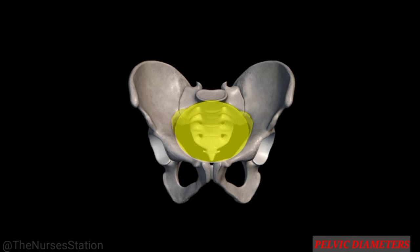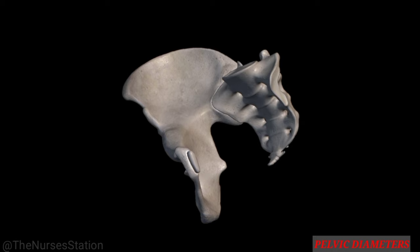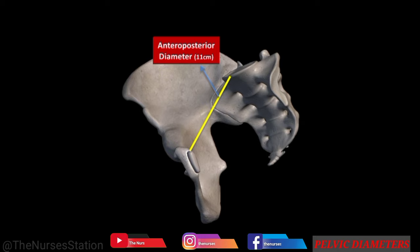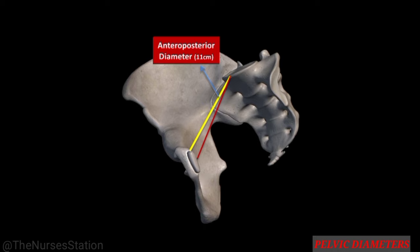The true pelvis is the pelvis below the pelvic brim, divided into the inlet, cavity, and outlet. The inlet is the brim of the pelvis; the cavity is bounded above by the inlet and below by the outlet. The inlet is almost round-shaped in the female gynecoid pelvis. The anterior-posterior diameter of the inlet — from the midpoint of the sacral promontory to the inner margin of the upper border of the symphysis pubis — measures about 11 centimeters. It is also called the true conjugate, anatomical conjugate, or conjugate vera.